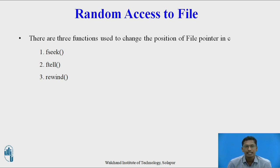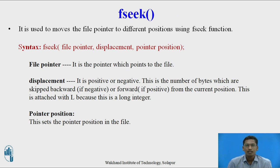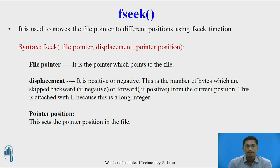The first function is fseek, the second one is ftell, and the third one is rewind. We will see all three functions one by one in detail. The fseek function is used to move the file pointer position to different positions either in the forward or backward direction based on the argument passed to it. The syntax is: fseek takes three arguments — first is the file pointer, second is the displacement, and third is the pointer position.